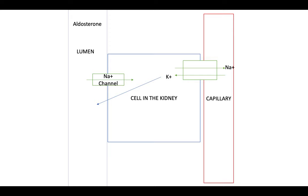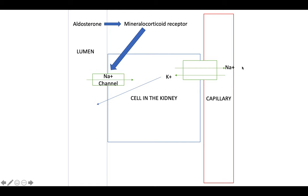When aldosterone is present, it binds to a mineralocorticoid receptor, which then activates the sodium channel, so sodium goes into the cell and gets reabsorbed. If aldosterone levels are high, more receptors get activated, more channels get activated, more sodium goes in, more sodium gets reabsorbed, and as a consequence more potassium goes into the cell and gets excreted.